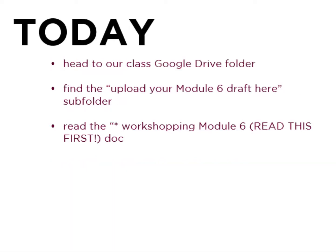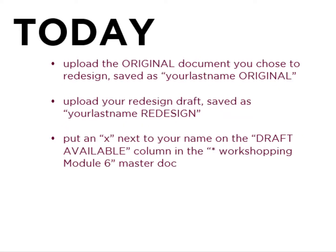For workshopping, head to your class Google Drive folder and into the 'Upload Your Module 6 Draft Here' subfolder. There's a document called 'Workshopping Module 6' — please read that first before you get started. Then upload the original document you chose to redesign as an image file (JPG or PNG) or a PDF, saved as your last name original. Then upload a second document — your redesign draft — saved as a PDF. Remember, if you upload a native INDD file none of us will be able to open or view it. Save this one as your last name redesign.